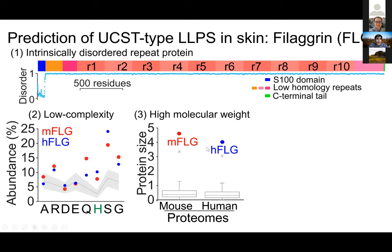Not only that, but filaggrin proteins are really, really large — both in mouse and humans, these are among the largest proteins in those proteomes. We thought the large size was important to encode a potent phase separation behavior. Most intriguingly, although these proteins contain many charged residues, they are exclusively biased towards arginine residues — they never use lysine — which we knew was important to encode phase separation behavior under physiological conditions.